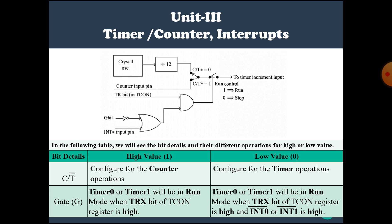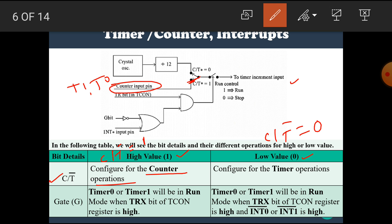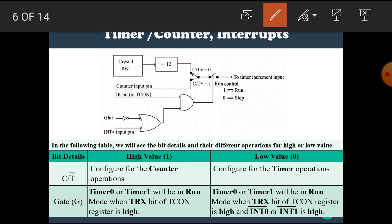Let's see the details about this diagram. The C/T̄ bit: when C/T̄ is equal to 1, it is configured for counter operation. The pulses for the counter come from the counter input pins T1 and T0. If C/T̄ has the value 0, then it performs the timer operation, and the source of pulses is from the crystal oscillator divided by 12.